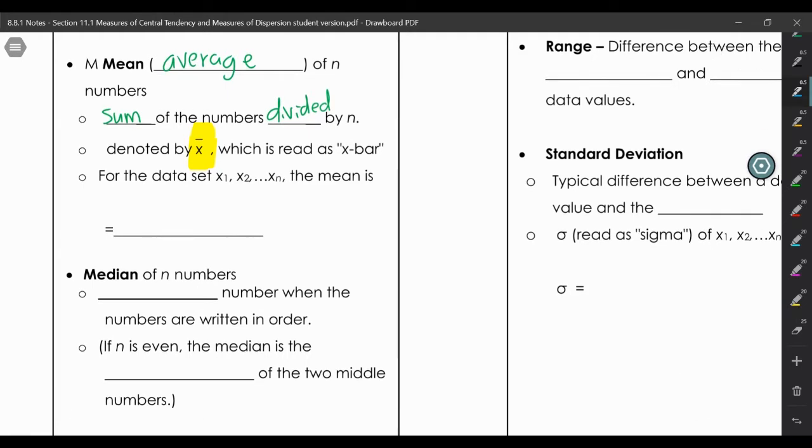So if we have this data set here, the mean would be adding up all these values and dividing by how many values there are.